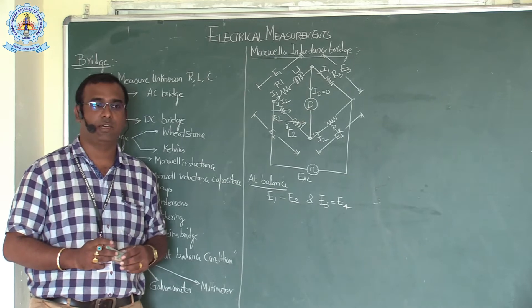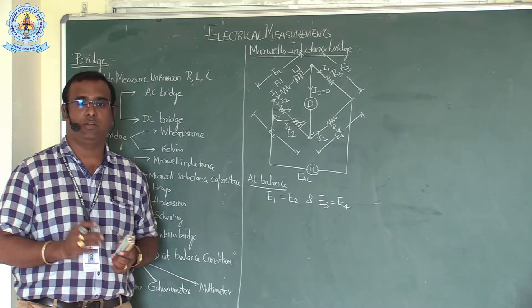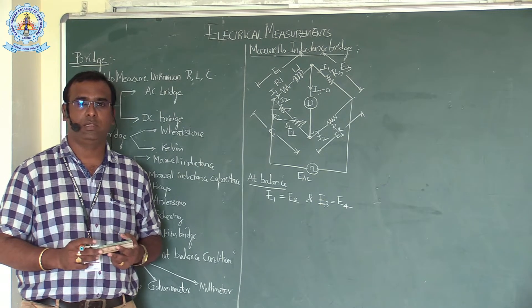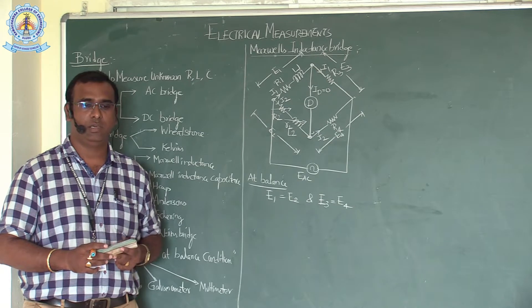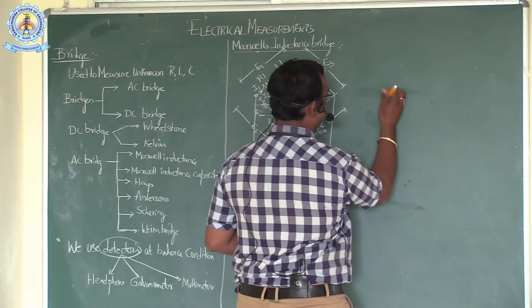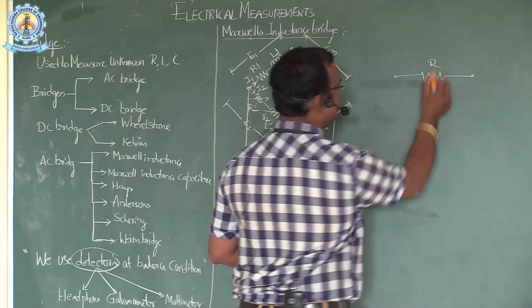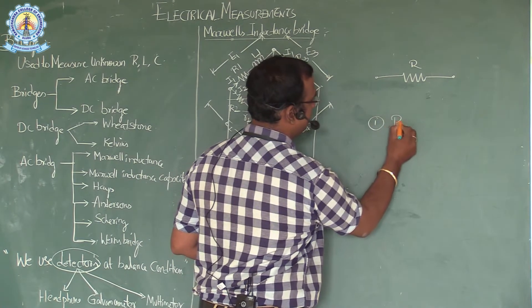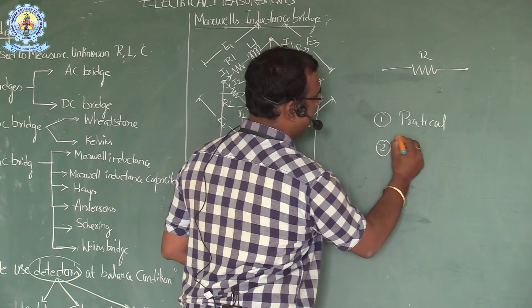First of all, there is a basic question: why is the bridge used? Generally, if you take any electronic or electrical component, we will find many resistors, inductors, and capacitors. How do we know the exact value of that resistance? There are two ways to measure the value of any parameter — one is a practical way and another is by analytical approach.